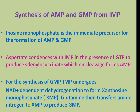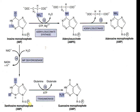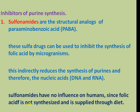Inosine monophosphate (IMP) is the immediate precursor for the formation of adenosine monophosphate (AMP) and guanosine monophosphate (GMP). Aspartate condenses with IMP in the presence of GTP to produce adenylosuccinate, which on cleavage forms AMP. For synthesis of GMP, IMP undergoes NAD-dependent oxidation to form xanthosine monophosphate, and glutamine then transfers its amide nitrogen to xanthosine monophosphate to produce guanine monophosphate.